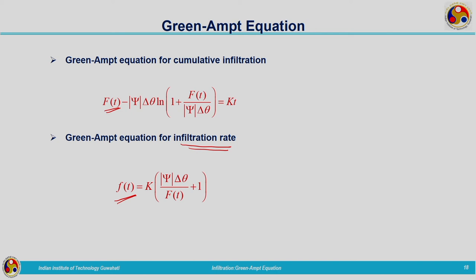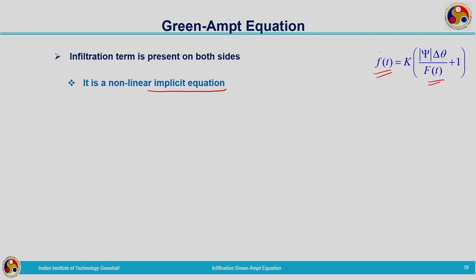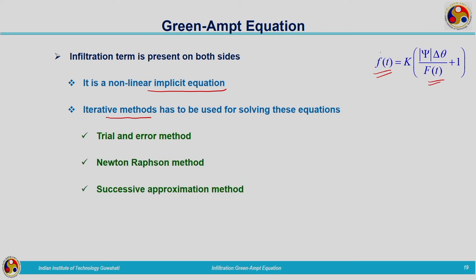Note that in both equations, the unknowns appear on both sides — F(t) appears on both sides of the cumulative infiltration equation, and infiltration rate and cumulative infiltration are coupled. These are non-linear implicit equations. To solve them we may need iterative methods such as trial and error, Newton-Raphson method, or successive approximation method.